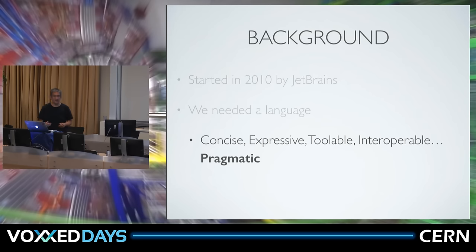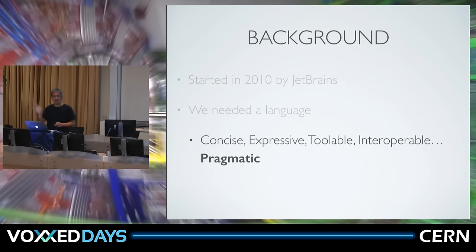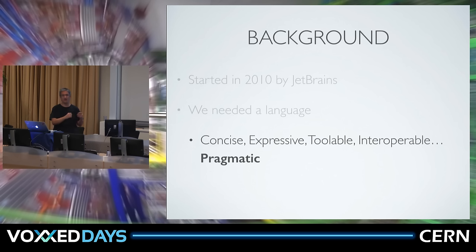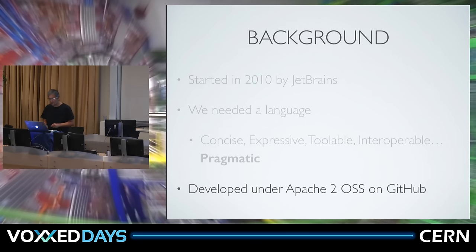We decided to come up with our own language. We needed something that was concise, expressive, toolable, interoperable, and pragmatic. We accomplished all of these goals — most of all the goal of being pragmatic, because it's really about finding issues we had with our language, finding issues other people had with Java and other languages, and trying to address them. It's developed under Apache 2 OSS on GitHub and has been there since day one.